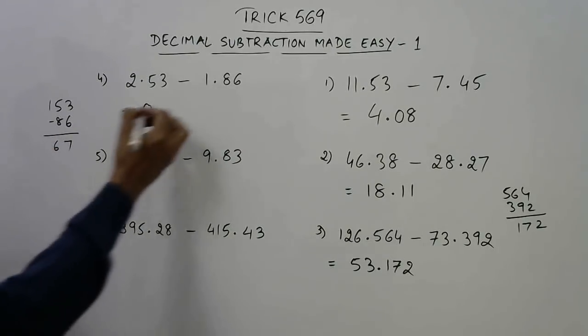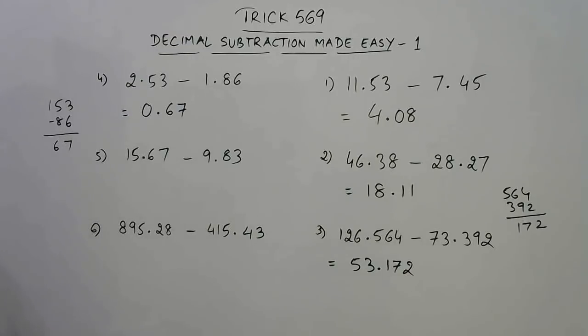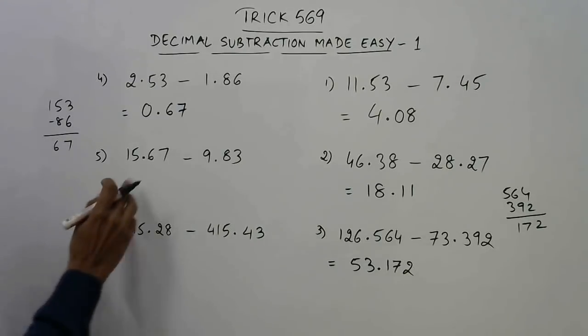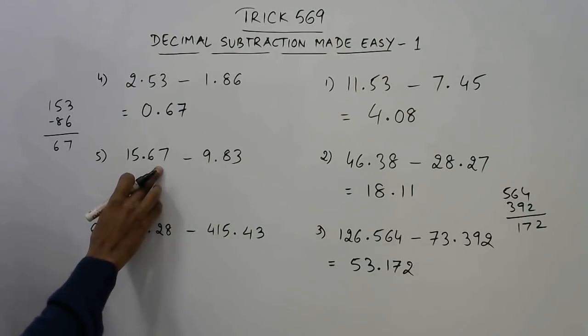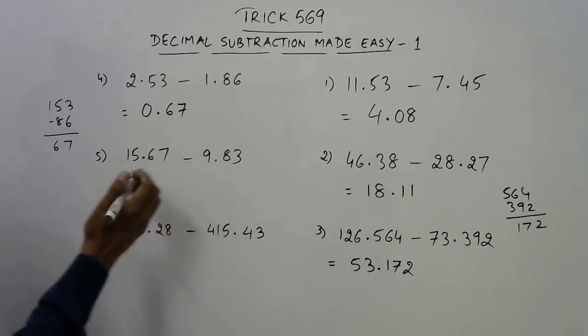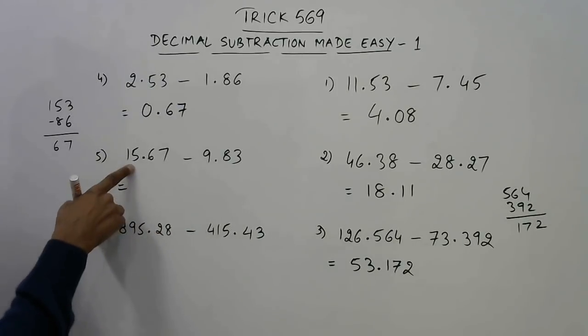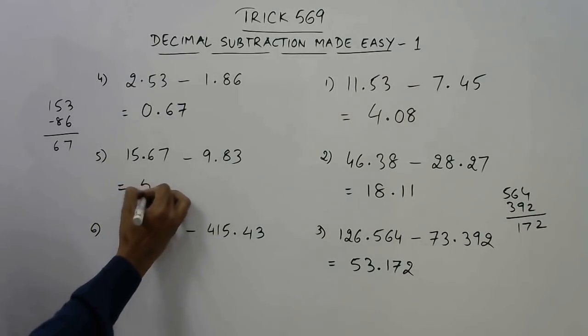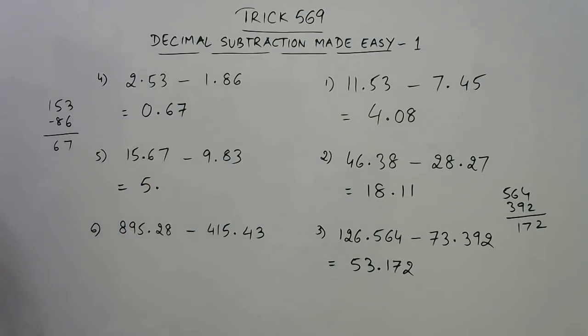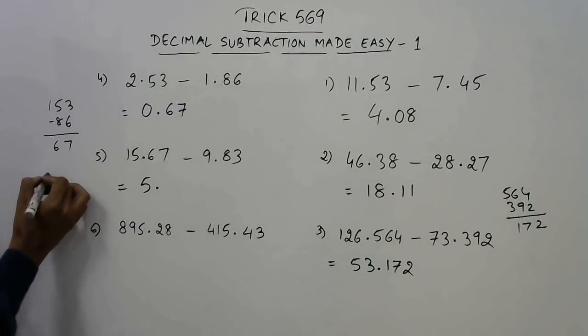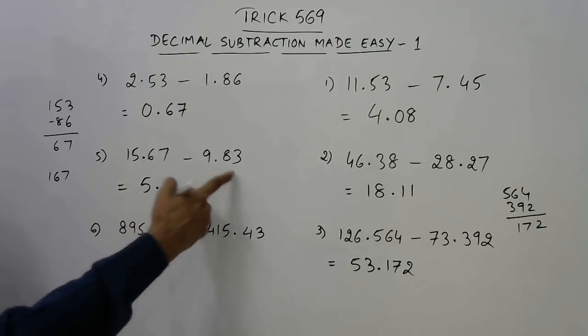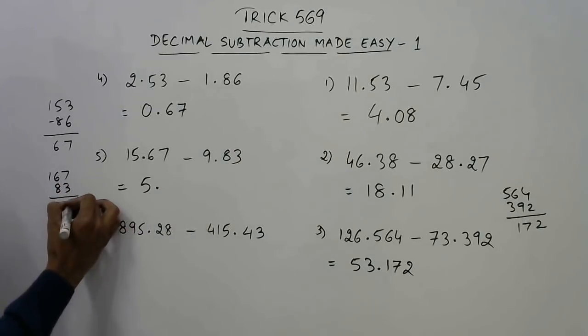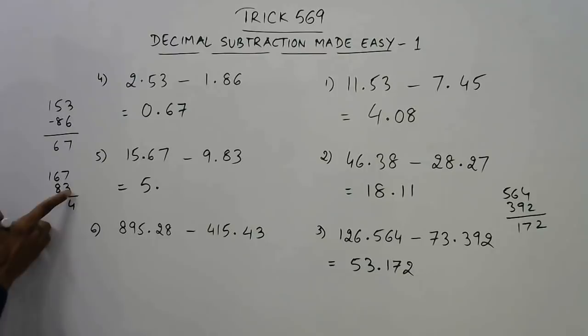Very important, very interesting also. Now see, 67 is smaller and 83 is larger. So 15 becomes 14, and 14 minus 9 gives you 5, so the answer will start with 5. And this 67 becomes 167, and we have to subtract 83 from this to get our answer. So 7 minus 3 is 4, and 16 minus 8 is 8.